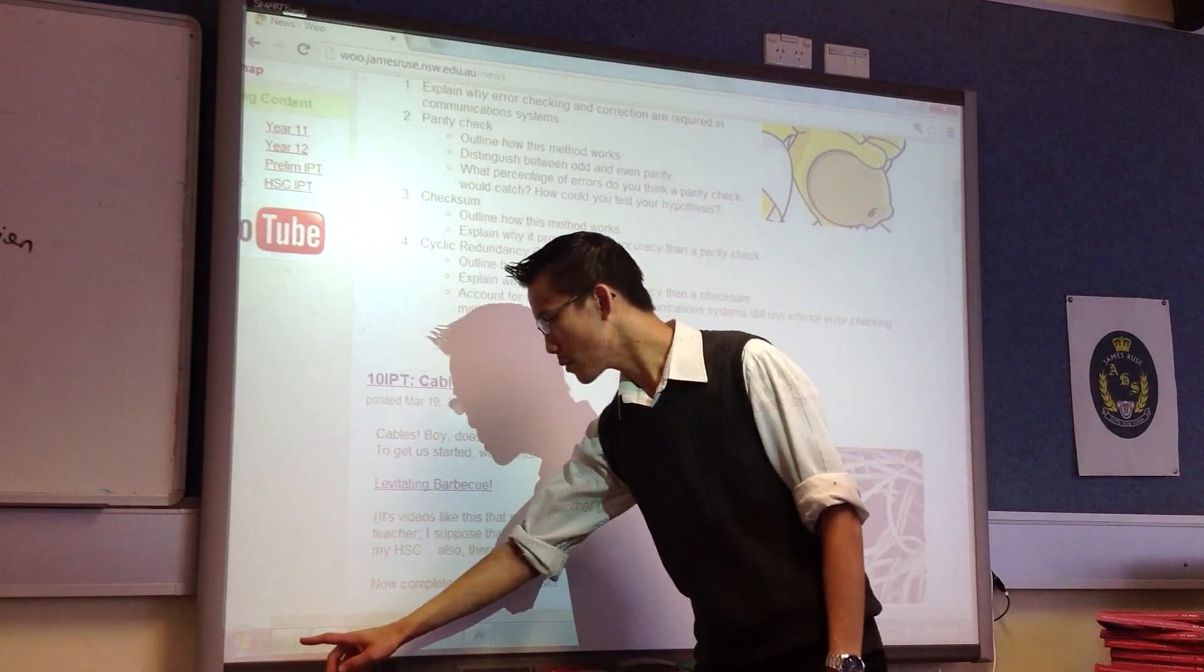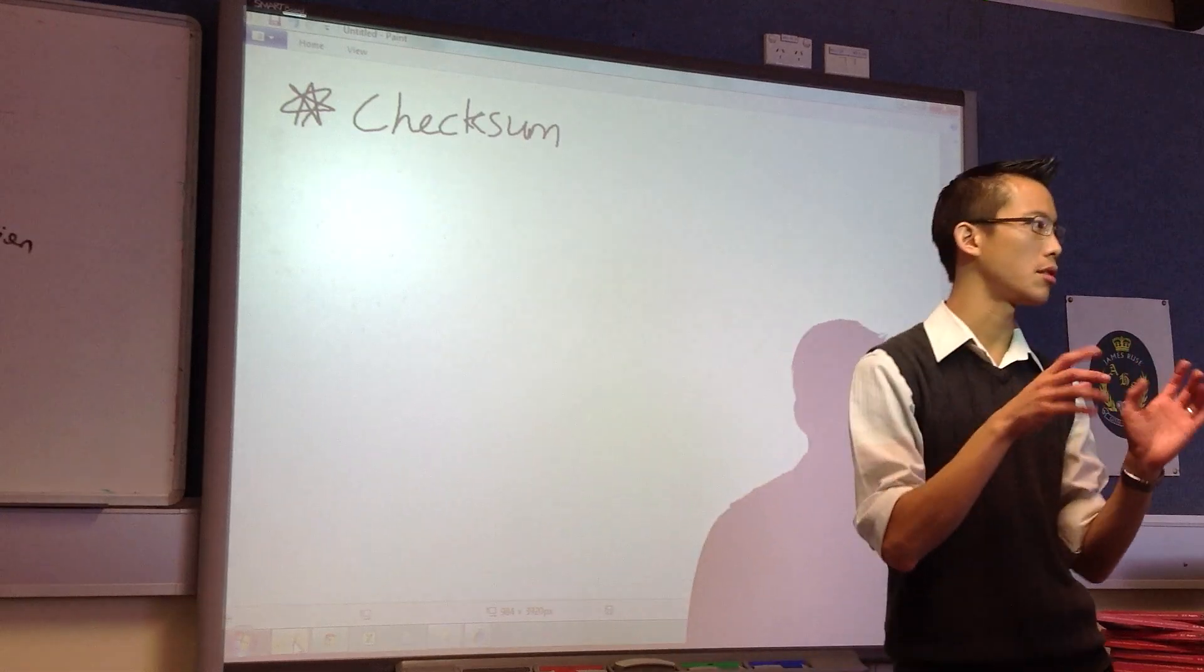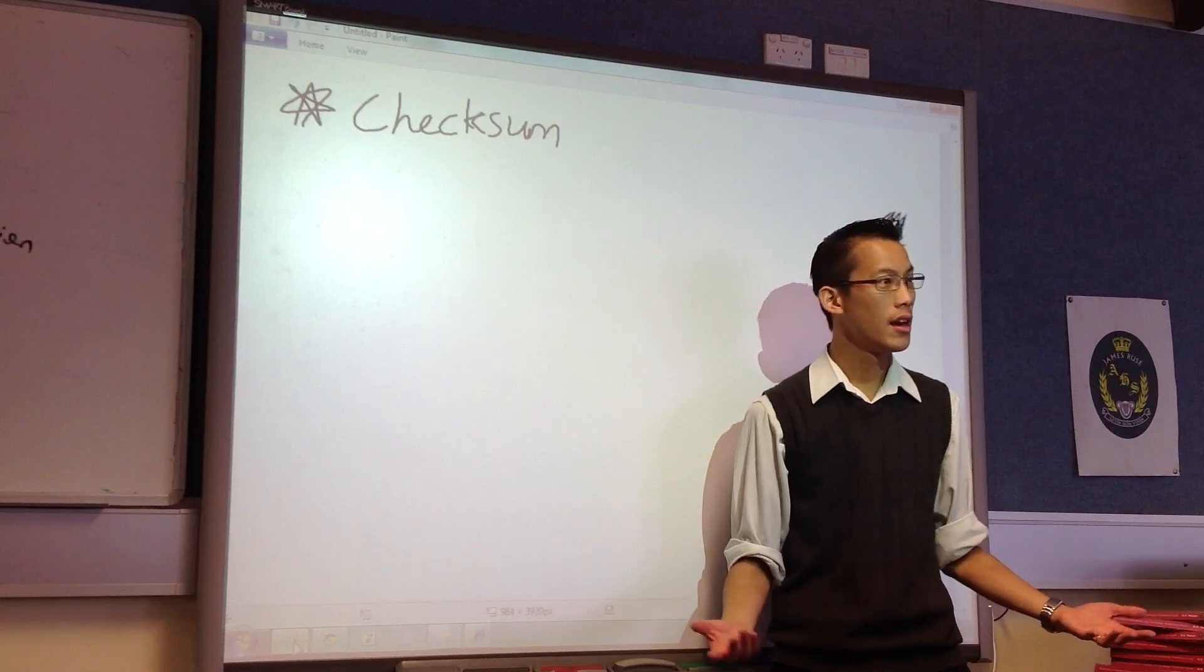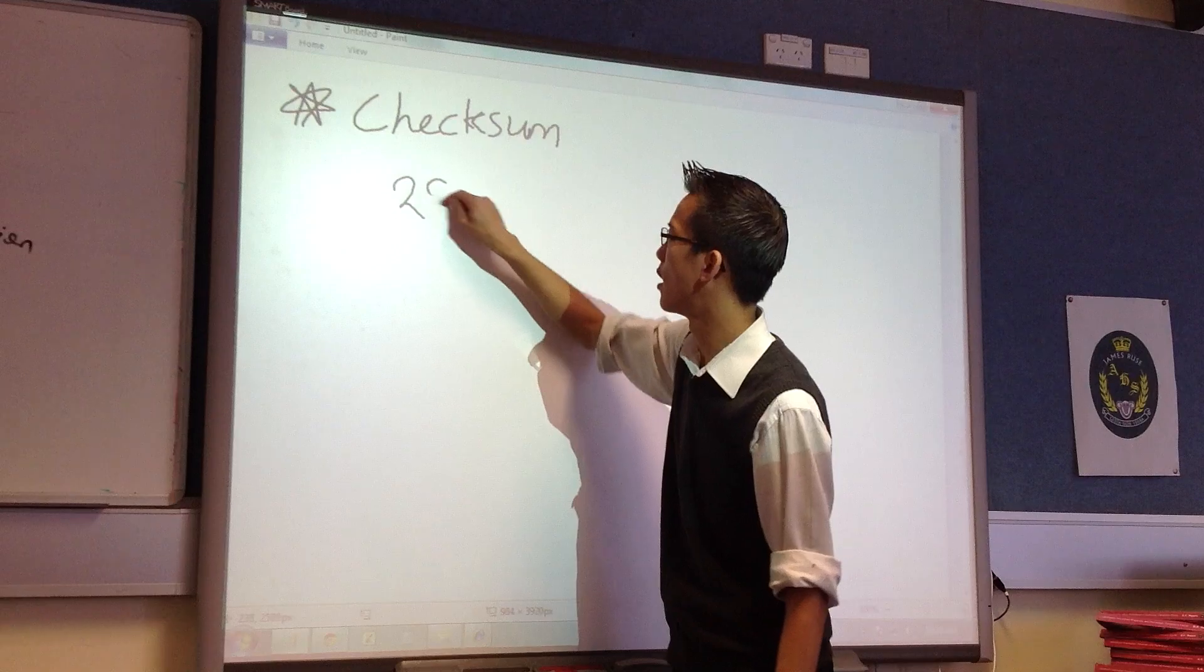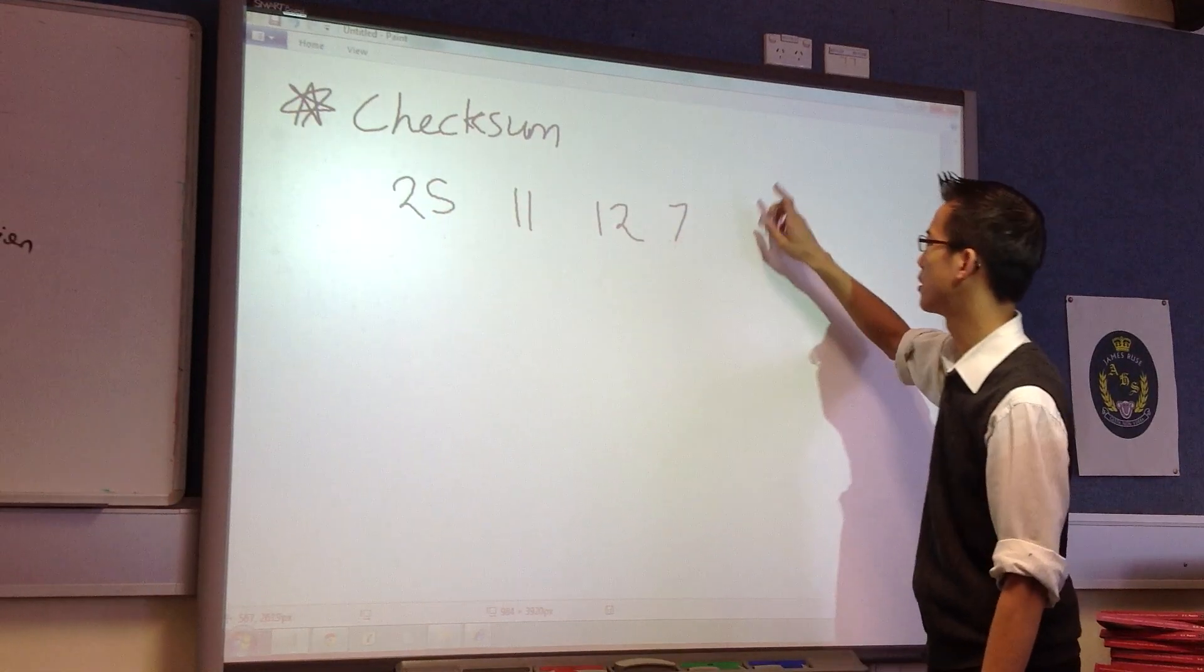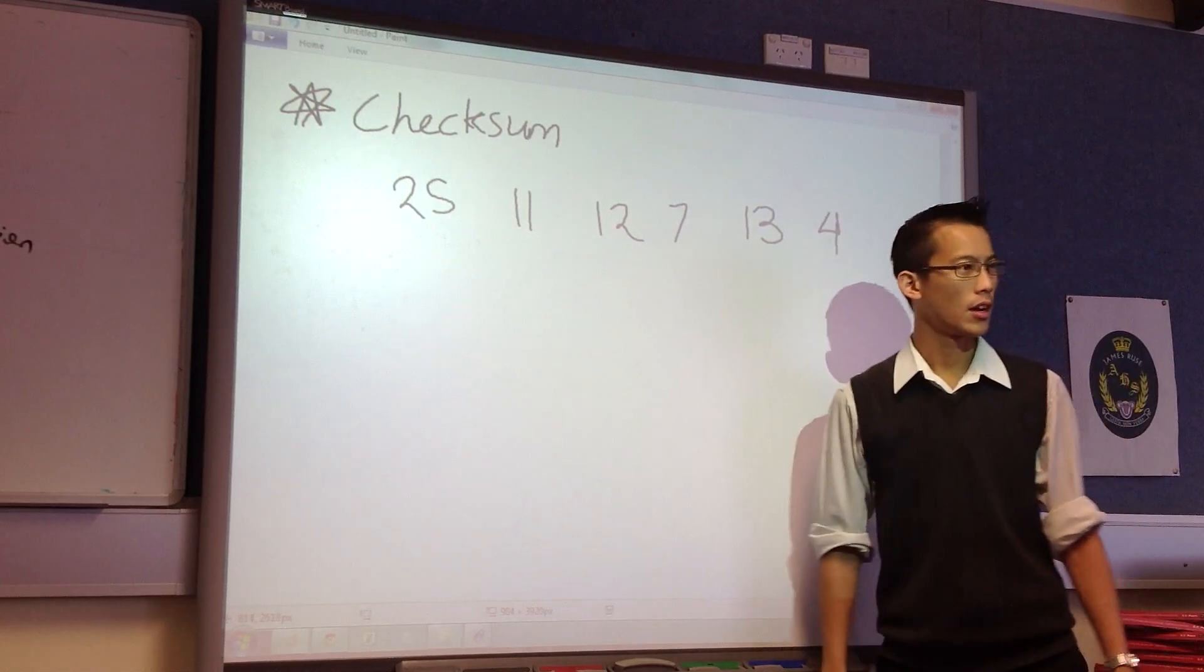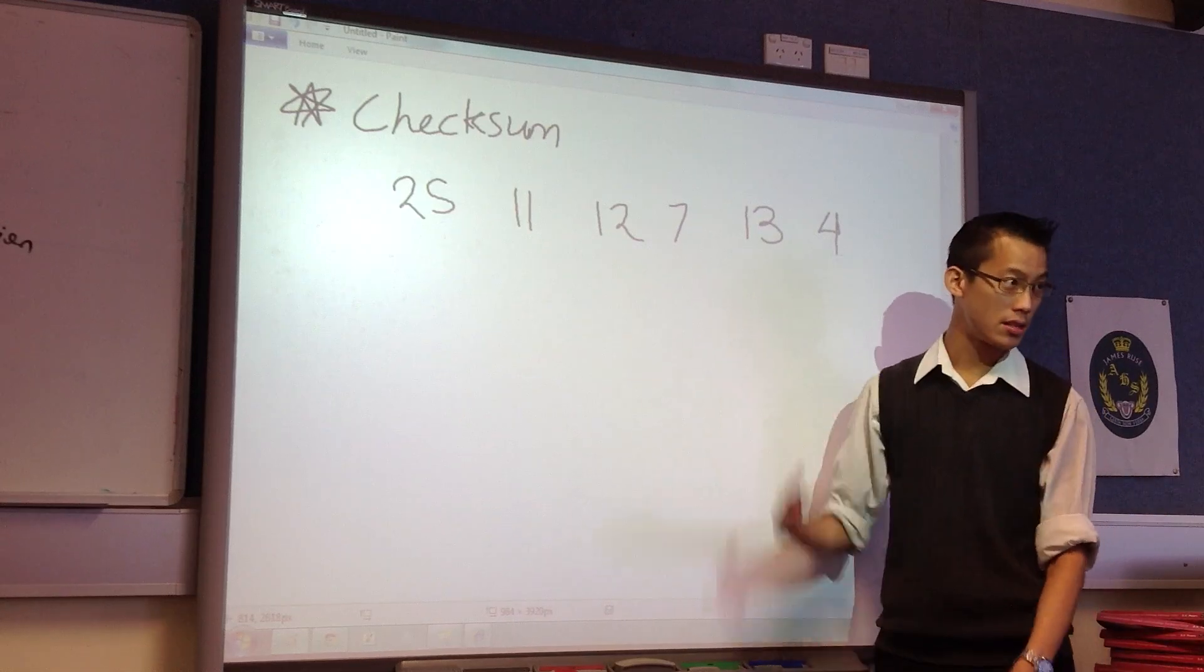So how does it work? Let's have a new message. Suppose I want to send you some actual text, and there are 26 letters in the alphabet. So suppose I'm going to send you a coded message like so: 25, 11, 12, 7, 13, 4. So all of these correspond to letters. I don't know what they correspond to, but this is the message I want to send.